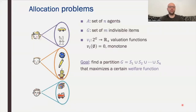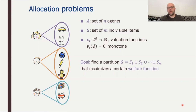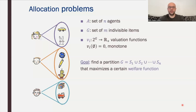We are interested in the following type of problem that I call allocation problems. We are given a set of N agents and a set of M indivisible goods. Every agent has a valuation function that specifies how much the agent values a certain set of goods. We assume they value the empty set at zero, and we assume that the valuation of every agent is monotone. The goal in an allocation problem is to partition the items and give them to agents in order to maximize certain welfare functions.